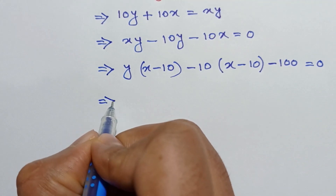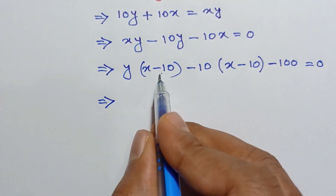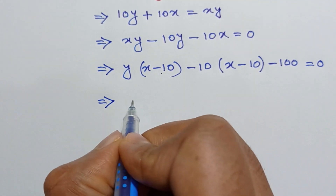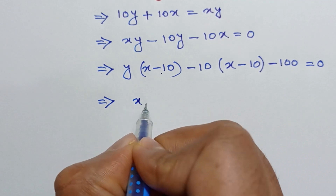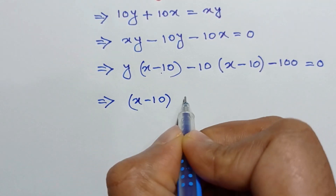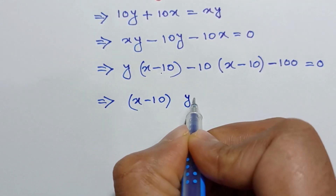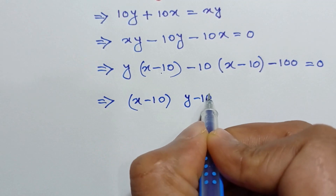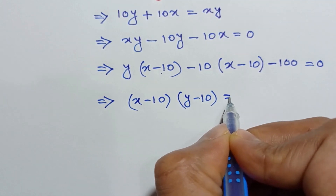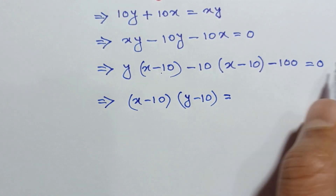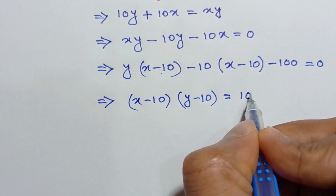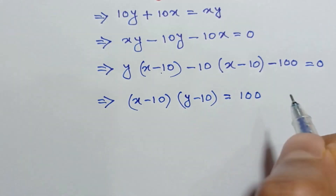Taking (x minus 10) common from the first two terms gives (x minus 10)(y minus 10). Taking the 100 to the right side, we have (x minus 10)(y minus 10) equals 100.